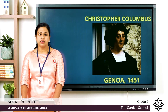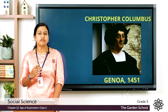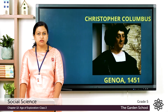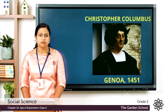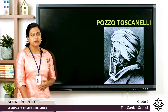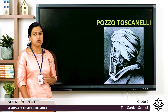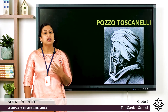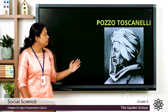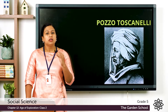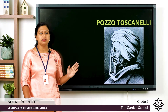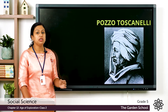His main aim was to find a sea route to reach the Asian countries for trading purposes. For this, a special map was sent to Christopher Columbus by an astronomer named Pozo Toscanelli. Astronomers are those persons who study about space. This map consisted of the idea that moving towards the west — crossing the Atlantic Ocean — they would reach the Asian countries.